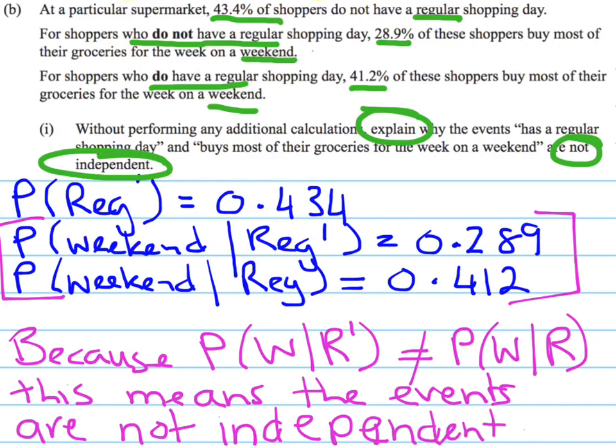The idea behind it is: if going shopping on the weekend and having a regular shopping day were independent events, then the probability of a weekend given not regular versus given regular should be very similar, if not exactly the same. Obviously that's not the case here — therefore, it is not independent.